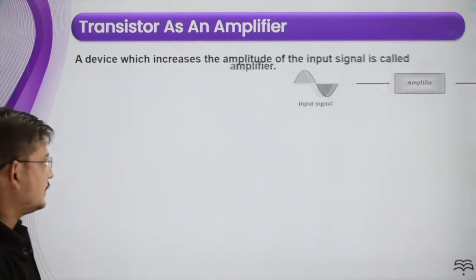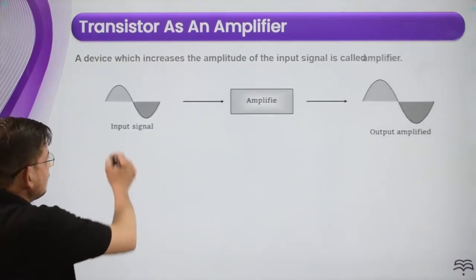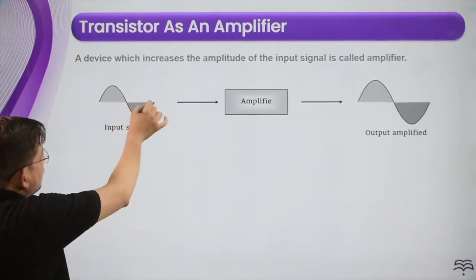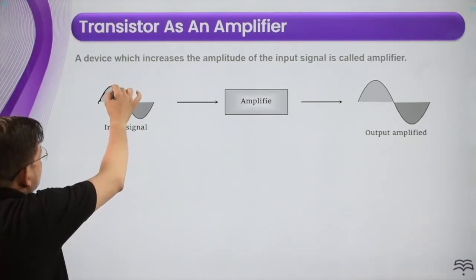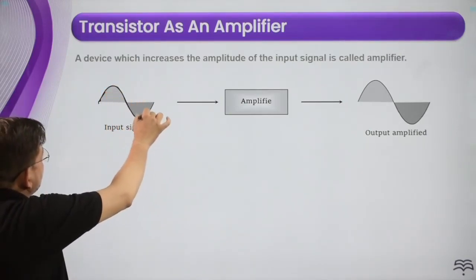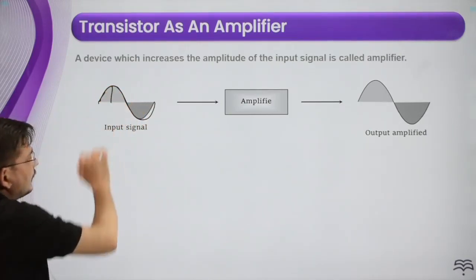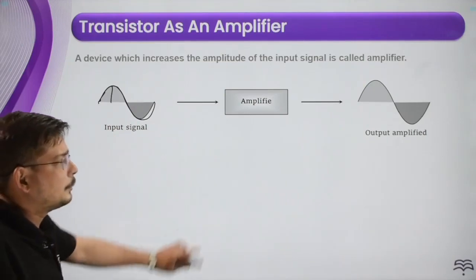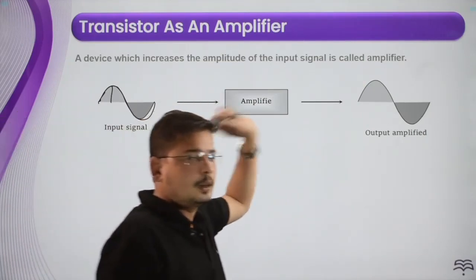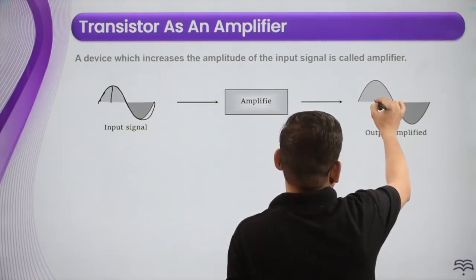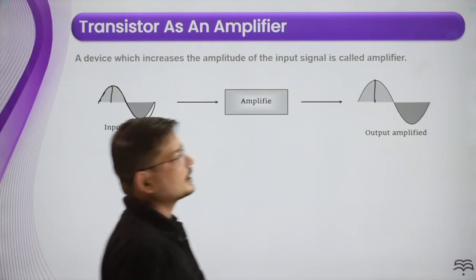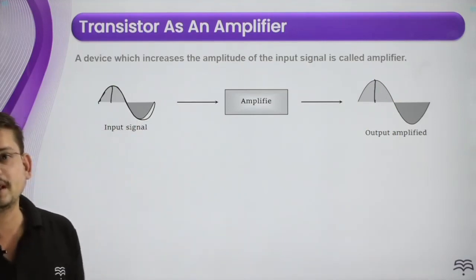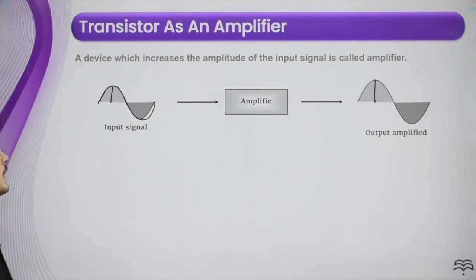You can see that the input signal wave is coming in. In this input signal wave you can observe that the amplitude is at a certain level. We applied the amplifier, amplified it, and we are getting the increased amplitude. The amplitude has increased by some amount — that work is done by the amplifier.